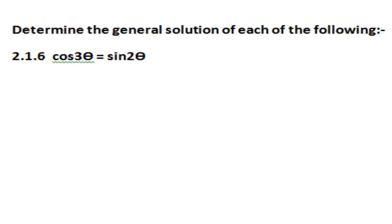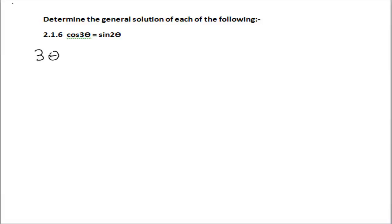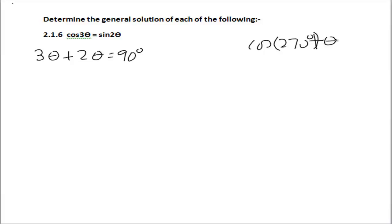This problem asks us to find the general solution of the equation. You'll notice the cos is on the left-hand side, so it's slightly different. We can find the sum of those angles: 3θ + 2θ = 90 degrees. Since cos is on the left-hand side, we use the identity cos(270° + θ) = sinθ, which will assist us.